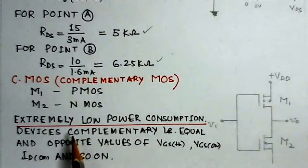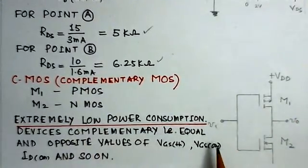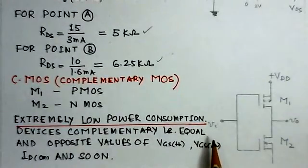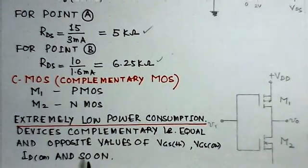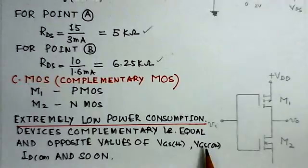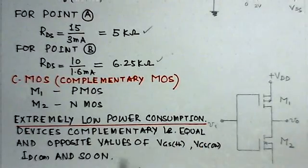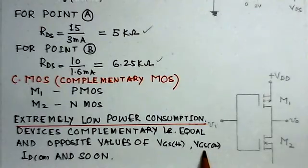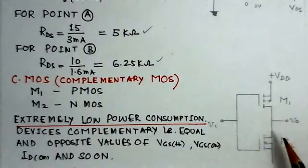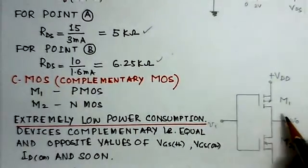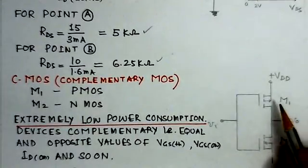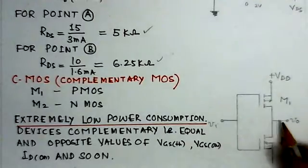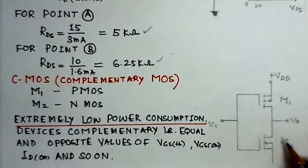And one of the important advantage for CMOS circuits is they give an extremely low power consumptions and they are very popular and they are being used in most of the digital circuits. So devices are complementary, that is why the name is complementary, and that is equal and opposite values of like VGS threshold, VGS on, ID on and so on. So these parameters or these transistors are equal and opposite because one is of P type and the other is for N type. So this circuit would also be encountered many times in the problems to be considered.